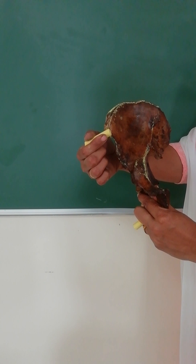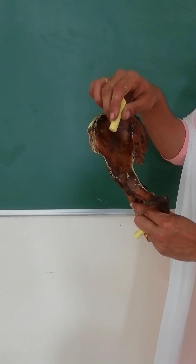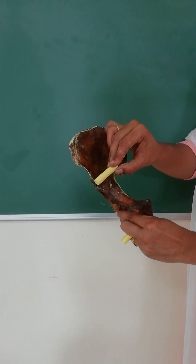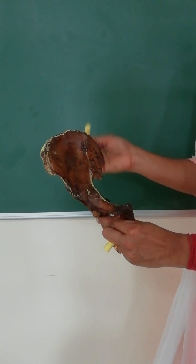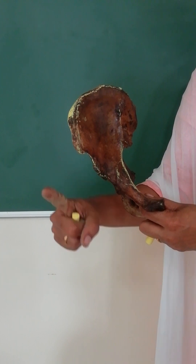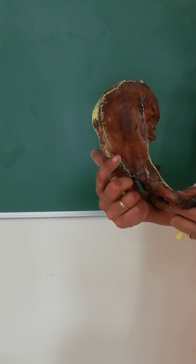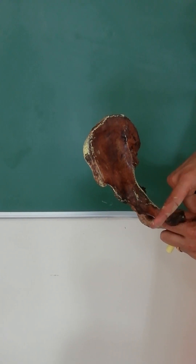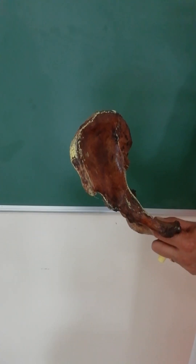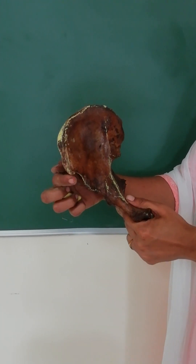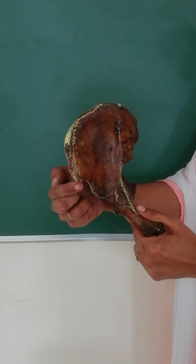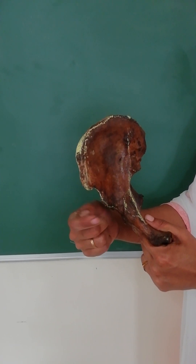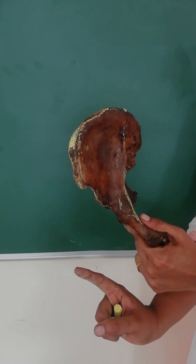Moving on to the borders — first, the anterior border. It has two projections: the anterior superior iliac spine above and the anterior inferior iliac spine below. At the anterior superior iliac spine, two structures attach: the sartorius muscle and the inguinal ligament. At the anterior inferior iliac spine, only one structure attaches: the straight head of rectus femoris.